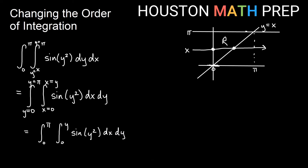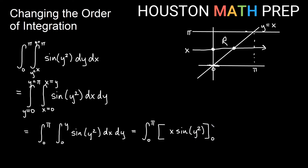If I integrate dx, everything is a constant just like before, so I get x times sine of y squared. These are x bounds that we evaluate from 0 to y, and then we'll integrate dy after. If I plug in y for x and 0 for x: plugging in y gives y times sine of y squared, and plugging in 0 makes the whole thing 0. So from 0 to pi dy, we get y sine of y squared dy, which can now be done using u substitution.